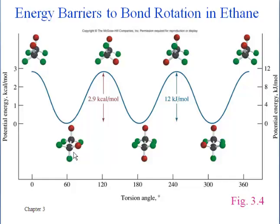You keep twisting that carbon-carbon bond 60 degrees at a time. The important takeaway from this slide is that the situations in which the bonds are eclipsed are drawn at the high position because they are at high potential energy, which equates to them being unstable.